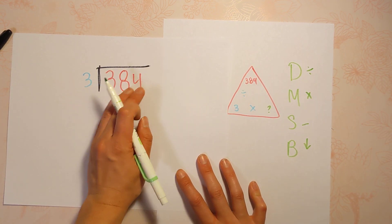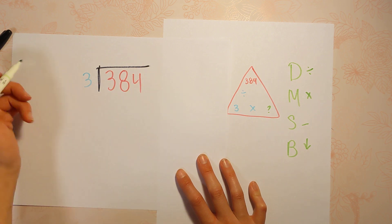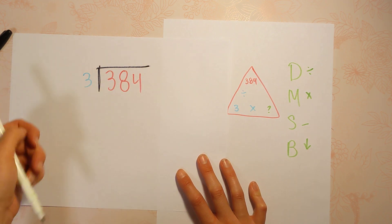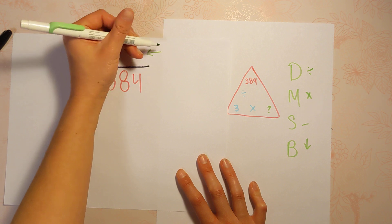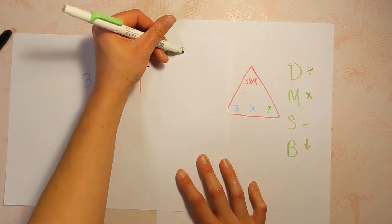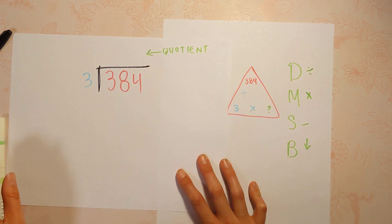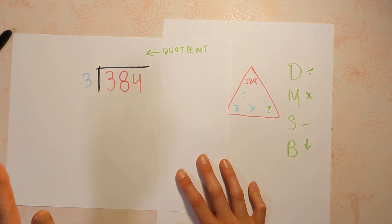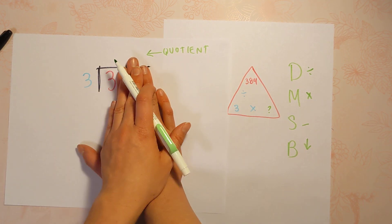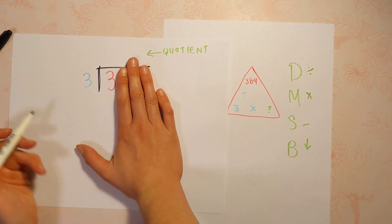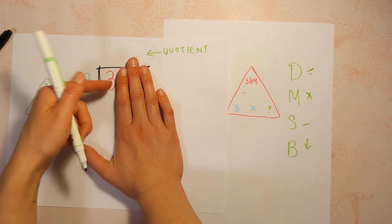This is our dividend — it's the number getting divided up. This is our divisor, the number we're dividing by. The answer is called the quotient. Let's get started. We're going to divide one digit at a time, so cover these guys up. We're starting on the left here.